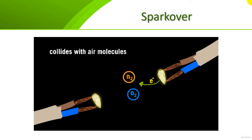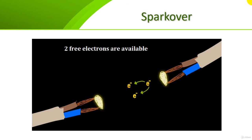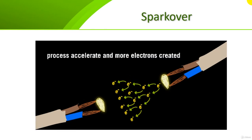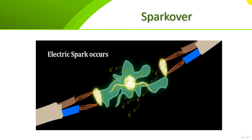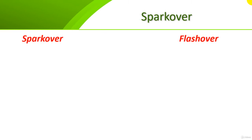When a high-energy free electron collides with neutral air atoms like oxygen or nitrogen, if the energy is high enough, the atom is ionized and an additional free electron is liberated. This process accelerates — two electrons become more, forming an exponential increase of free electrons called an electron avalanche, which finally leads to an electric spark between the two conductors.